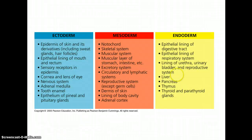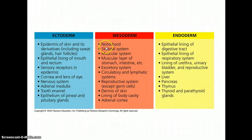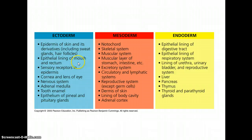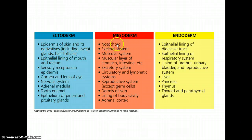So we have our three germ layers: ectoderm, mesoderm, and endoderm. Mesoderm forms the notochord and skeletal system; ectoderm forms the nervous system and becomes the skin and outer covering, including epithelial cells lining the mouth. Just remember a few of the structures that form from each of these germ layers — you don't need to memorize the whole list.